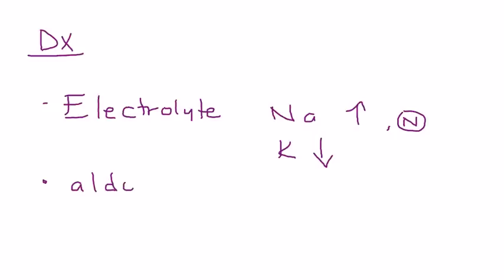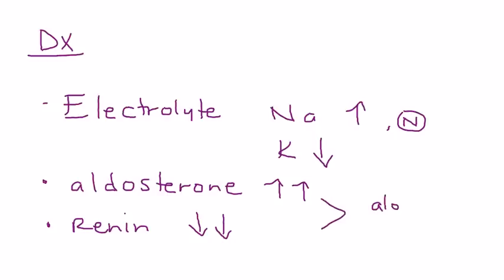Another thing you measure is aldosterone. And this will be high. And another enzyme that you measure is renin. And renin will be low. Because the kidney senses that there's high blood pressure. And that results in the renin levels being low. And, sometimes, you can do a ratio of these aldosterone to renin level.